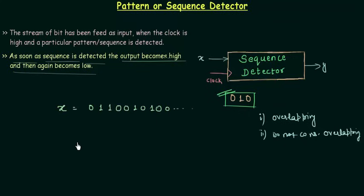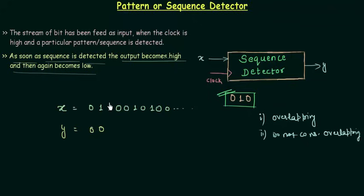Y is my output. The sequence detector checks the first bit, which is 0, and it matches the first bit of our pattern — that's a good sign. But the output remains 0 because we don't have the complete sequence yet. Then it checks the second bit, which is 1 — also good, since our first two bits to detect are 0, 1. Output is still 0. Then it checks the next bit, but we get 1 from the stream when our pattern needs 0, so output stays 0. For the following bits output also remains 0.